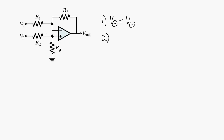The other assumption I'm going to make use of is that no current flows into either one of these terminals — no current into the inverting terminal, no current into the non-inverting terminal. So what that means is the current through R1 is going to be equal to the current through RF, and the current through R2 is going to be equal to the current through RG. So I'm going to have these three conditions imposed on the circuit by assuming the op-amp is ideal.